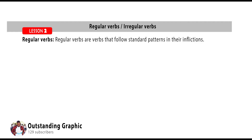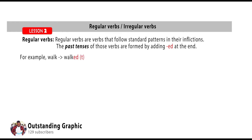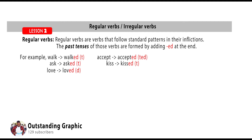Regular verbs are verbs that follow standard patterns in their inflections. In other words, the past tenses of those verbs — such as simple past and past participle — are formed by adding '-ed' at the end. For example: walk becomes walked (with a T sound), accept becomes accepted, ask becomes asked (with a T sound), kiss becomes kissed, love becomes loved, like becomes liked, stop becomes stopped (with a T sound), and agree becomes agreed (with a D sound).